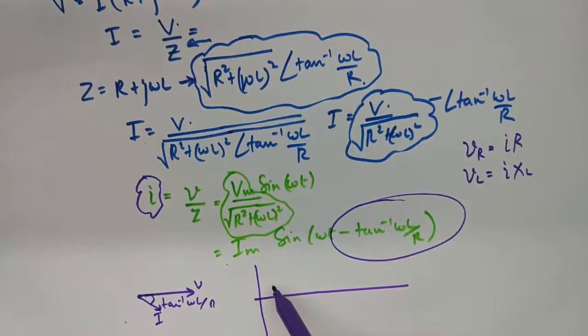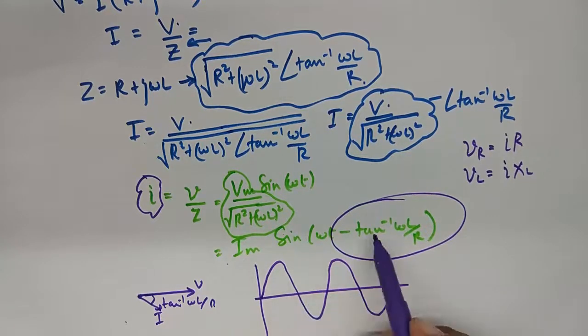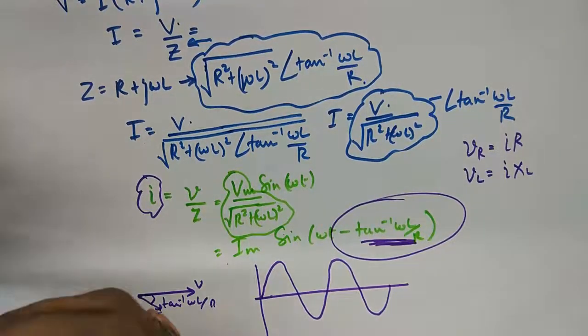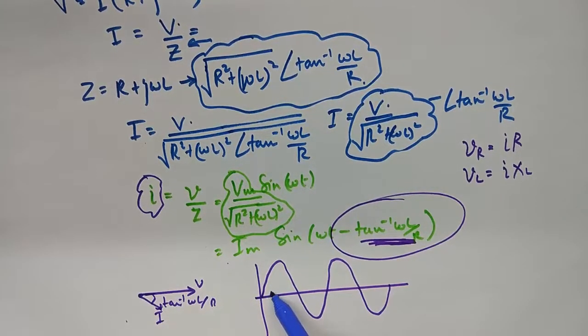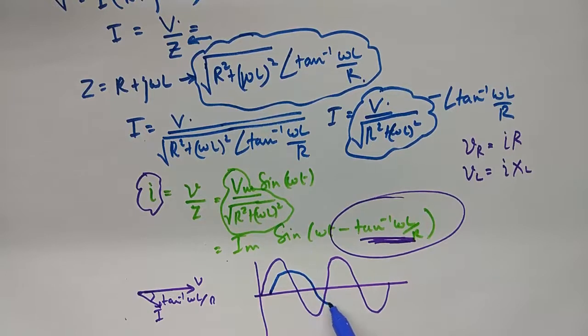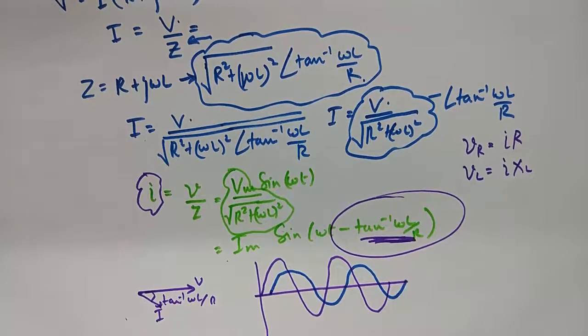But my current is now lagging by an angle of this much. So lagging means I'll start it from here, some point later in time, but I would want the magnitude to be lesser, something like this.